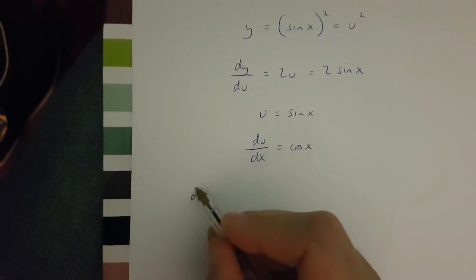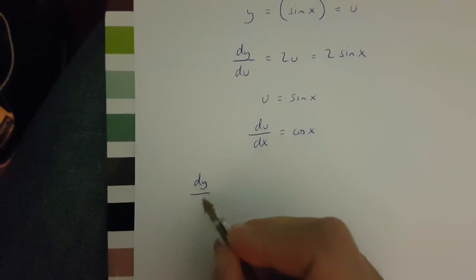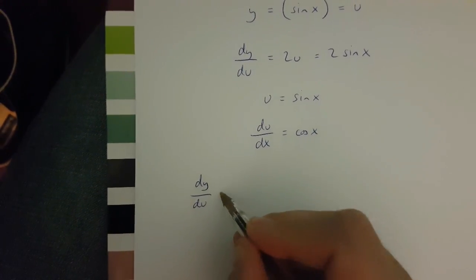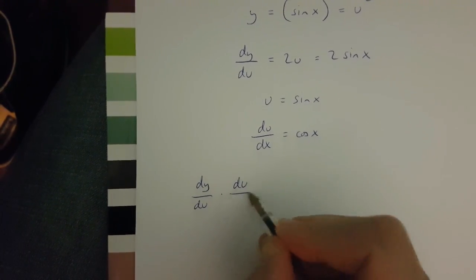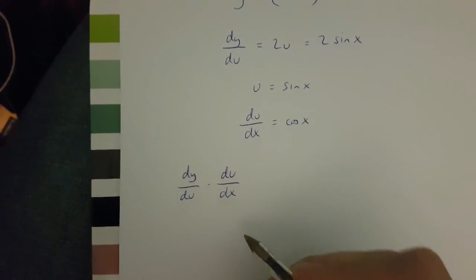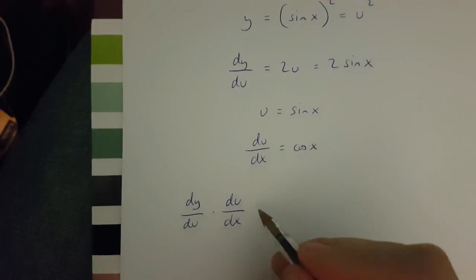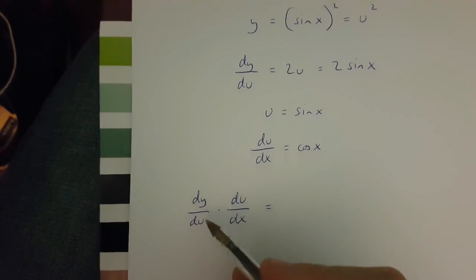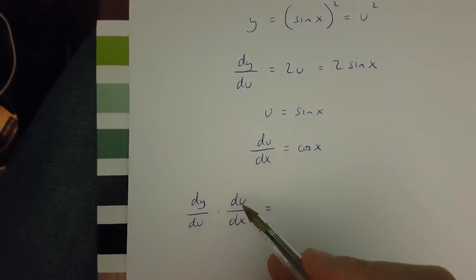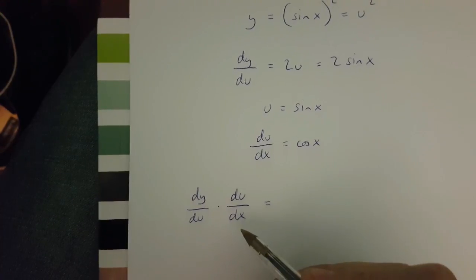Now, the chain rule is dy over du times du over dx equals dy over dx. However, what is dy over du and what is du over dx?